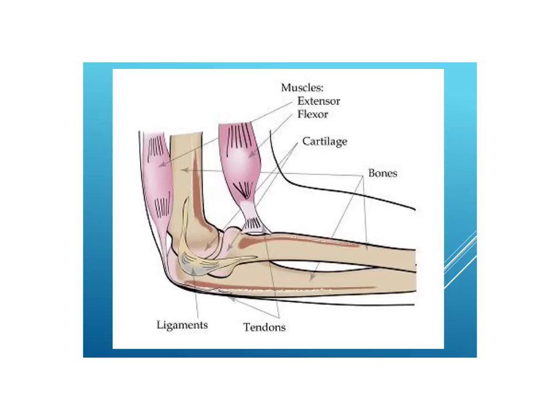Here's a typical joint — the elbow joint. We have muscles: flexors and extensors. We have bones, and then connective tissue fibers called ligaments that hold bone to bone, and other connective tissue fibers called tendons that hold muscles to bones.